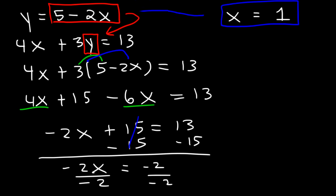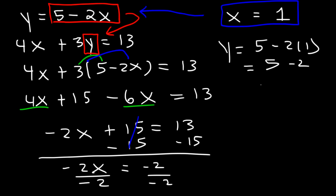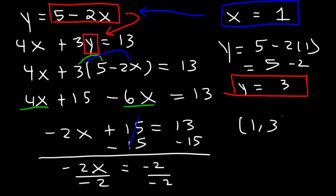Now that we have x, let's plug it into the first equation to get y. So y equals 5 minus 2 times 1. 2 times 1 is 2, and 5 minus 2 is 3. So y equals 3. Therefore the solution to this system of equations is (1, 3).